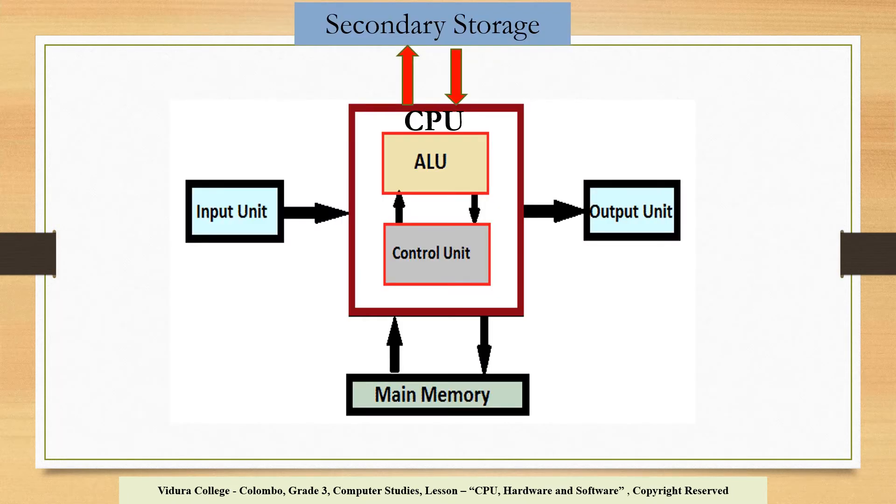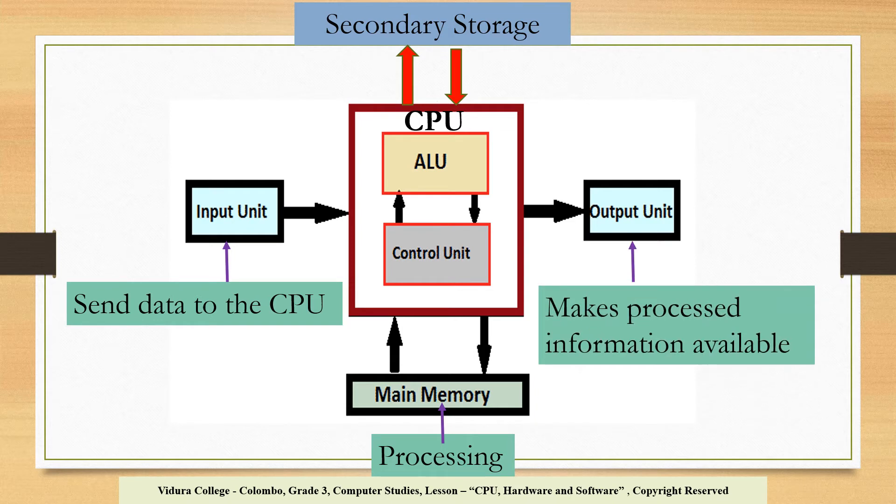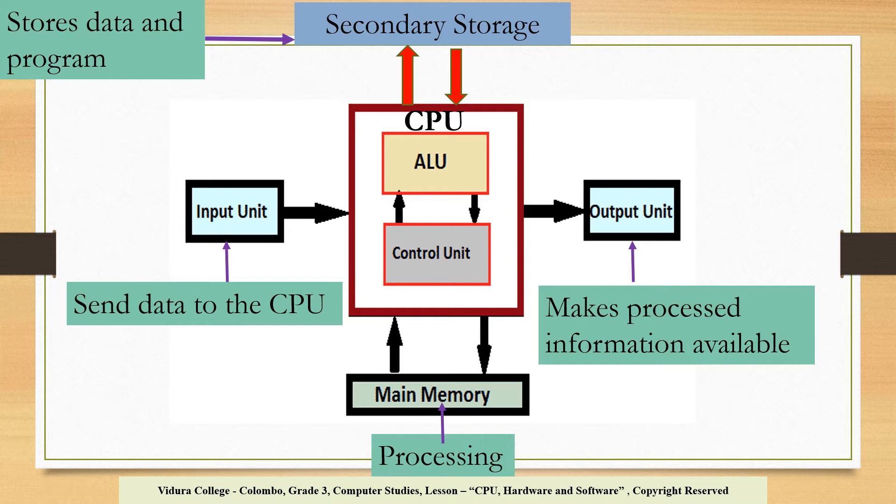Before we learn about the functions of these parts of the CPU, we will see the structure of the computer. Look at this, children. Using input devices, we input data to the CPU. CPU processes them and then sends them to output devices. The data and programs are stored in the main memory and the secondary storage devices.